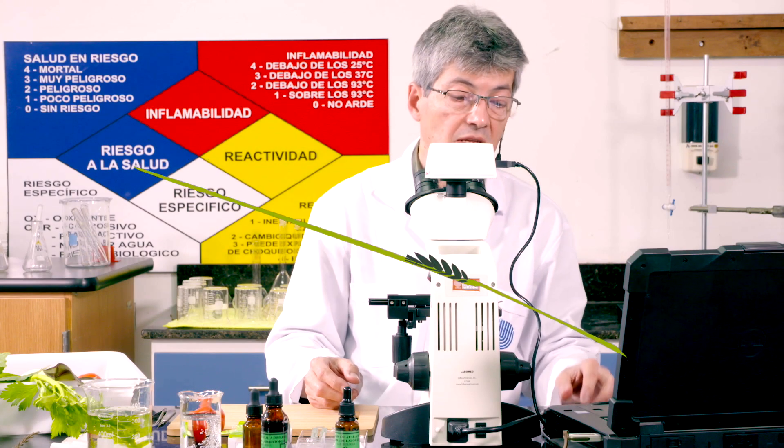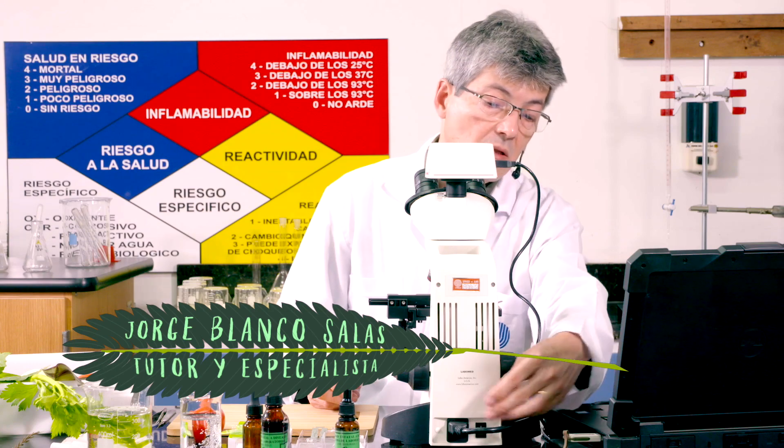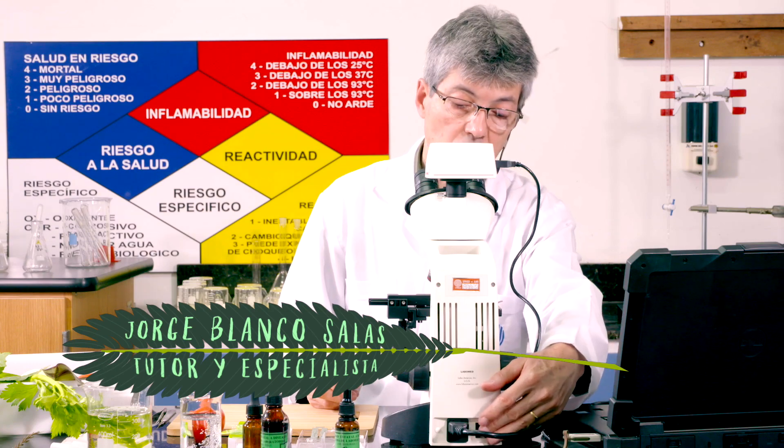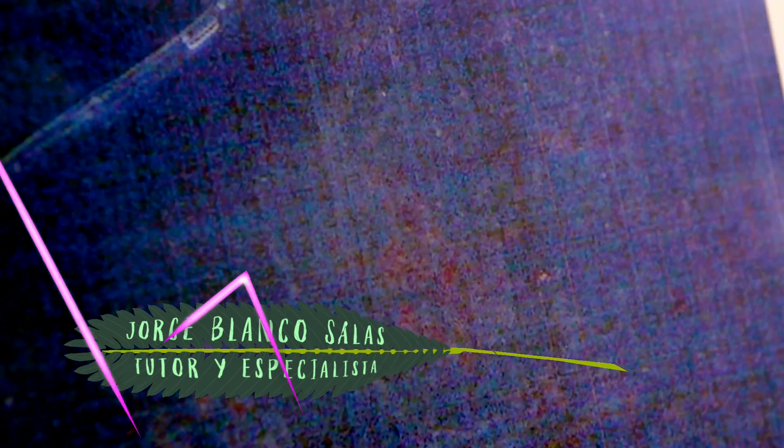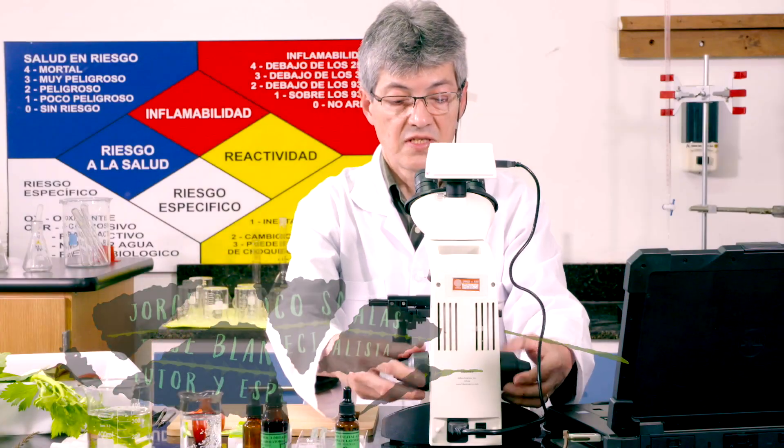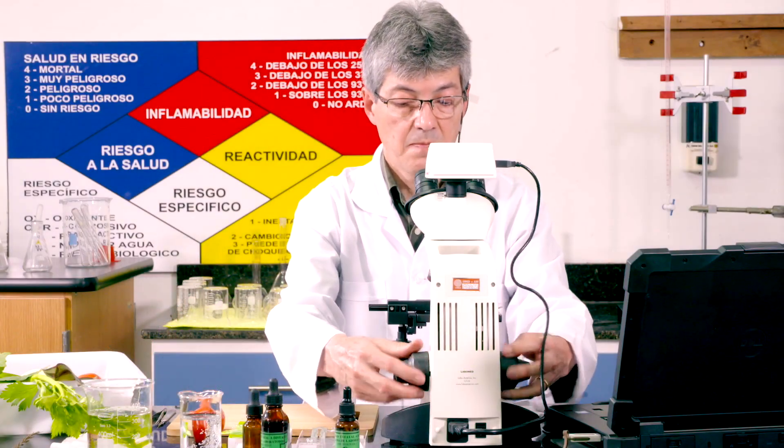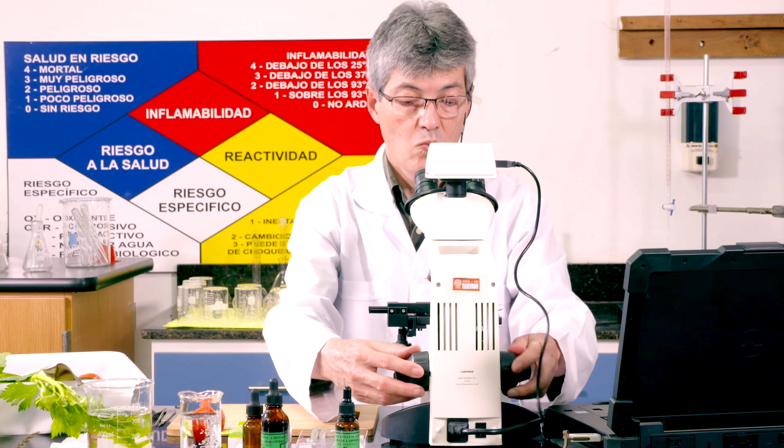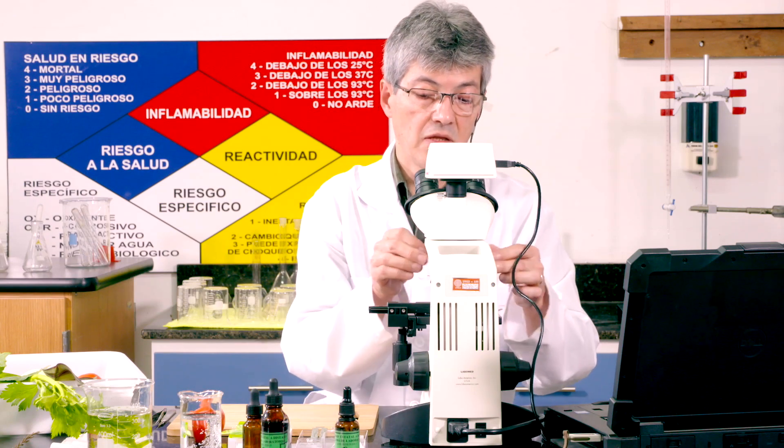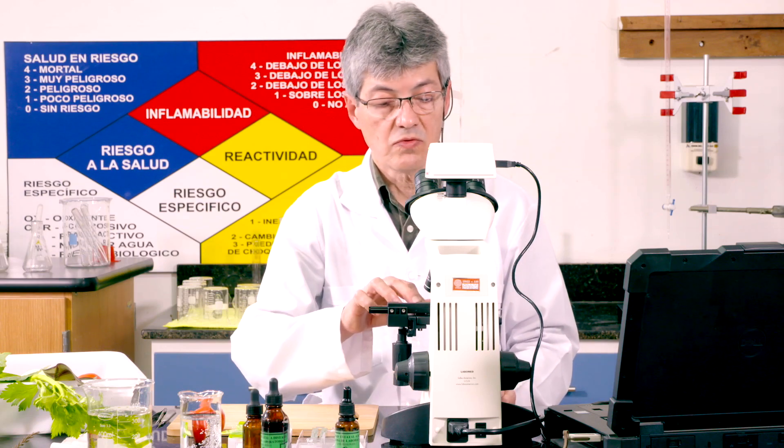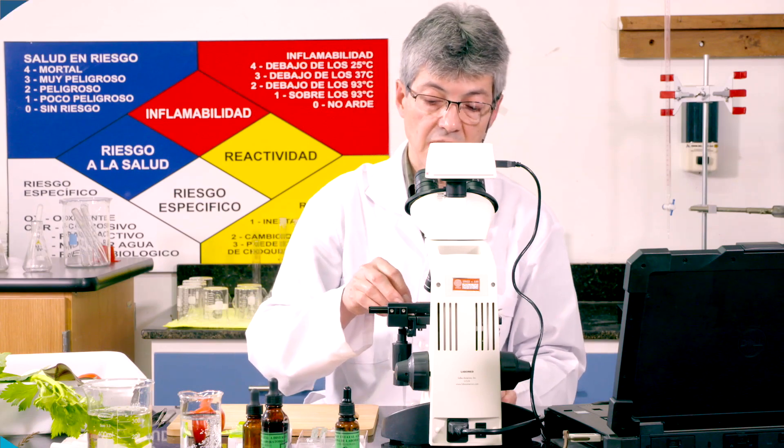We proceed to remove it. We turn off our microscope. We lower our platina completely. We put the objective lens of lower magnification, the red one. And we remove our sample to see the next one.